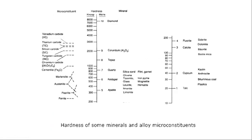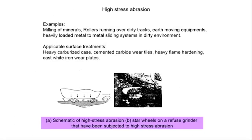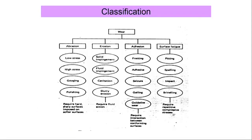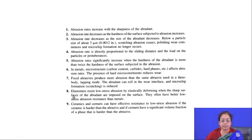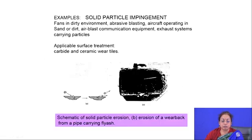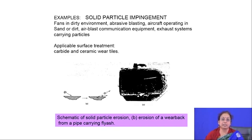If you talk about the different erosion phenomena and go to the classification, we will see that erosion can be divided into four sub-categories: solid impingement, fluid impingement, cavitation erosion, and slurry erosion. The names are after the environment the component is exposed to, or in some cases after the phenomenon responsible for the particular process.